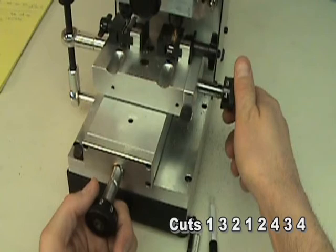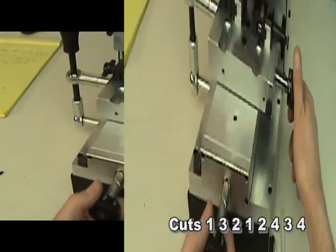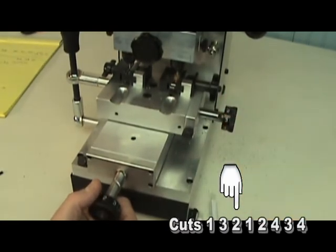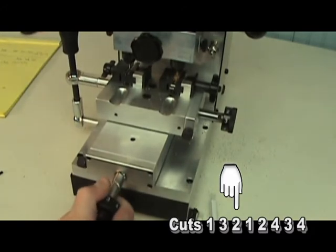If this procedure is not followed, you will miscut your key. In our third position, we have a two depth. So turn your depth rod to a number two, then turn the space rod to the third position.